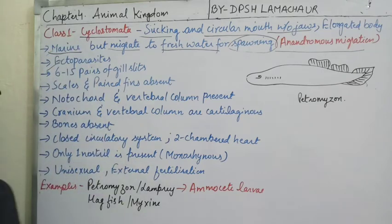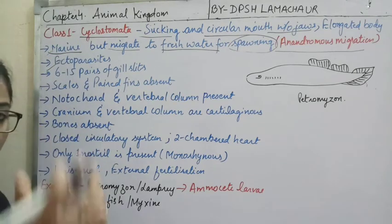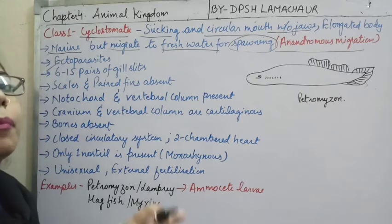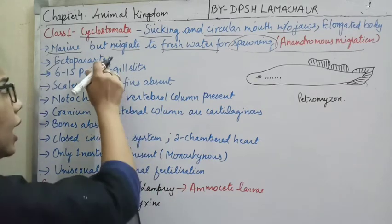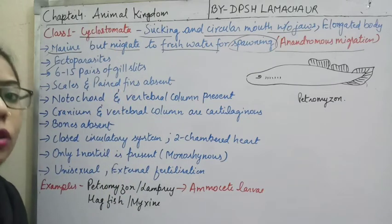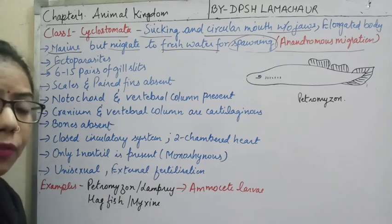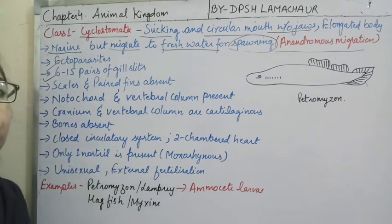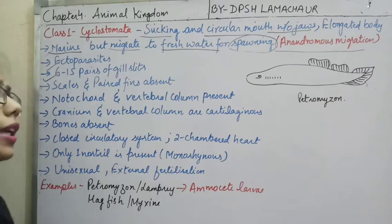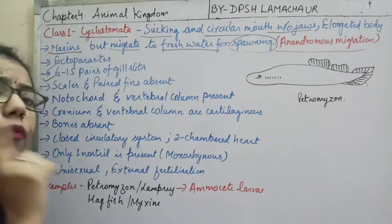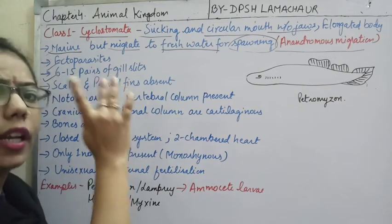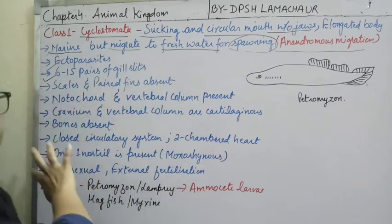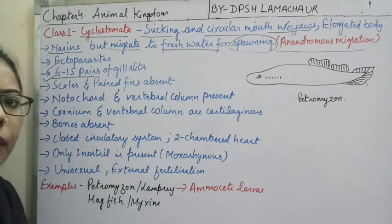They are ectoparasites — 'ecto' means outer. They live on the body of other fishes and take nutrition from them, harming the host animal. They are having 6 to 15 pairs of gill slits for respiration. As Cyclostomata comes under Vertebrata, it follows characteristics of notochord, nerve cord, pharyngeal gill slits, and ventral mouth.